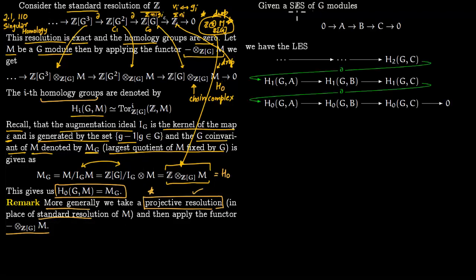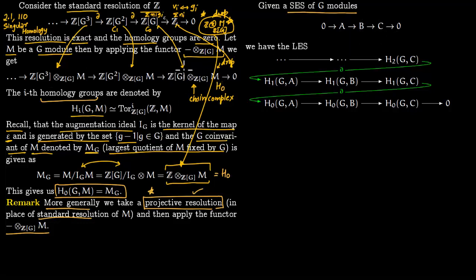If you are given a short exact sequence of G-modules, you can take projective resolutions of all three of them, or take standard resolutions tensored with A, B, and C respectively. You get three chain complexes, which will look exactly the same in form. Once you have chain complex maps, you get a long exact sequence in homology: · · · → Hₙ(A) → Hₙ(B) → Hₙ(C) → Hₙ₋₁(A) → · · ·